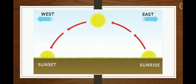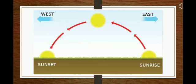The sun always rises in the east. Slowly it goes up above our heads, then gradually goes towards and sets in the west. According to this changing location of the sun, the daytime has been divided into three major parts.